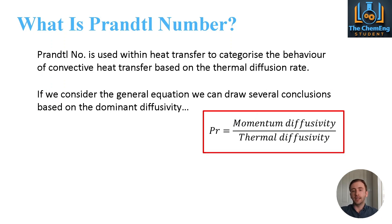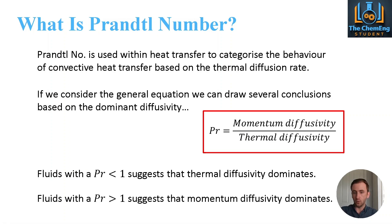Prandtl number is generally used to categorise the behaviour of convective heat transfer based on the thermal diffusion rates. We can consider that if we look at it from the standpoint of momentum over thermal diffusivity because we can actually draw some conclusions based solely on this ratio. The first conclusion is that if fluids with a Prandtl number less than 1, then that suggests that we have a thermal diffusivity which dominates the system, so they have systems that diffuse heat very well.